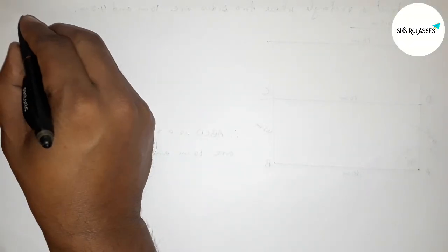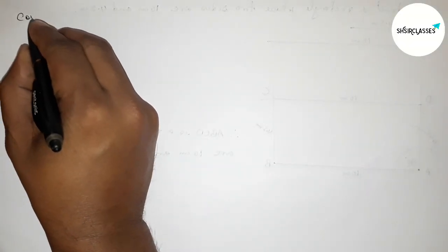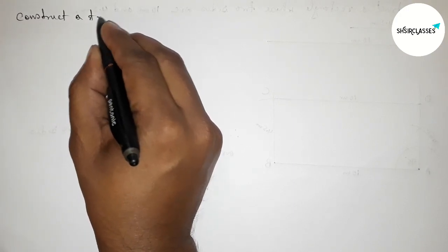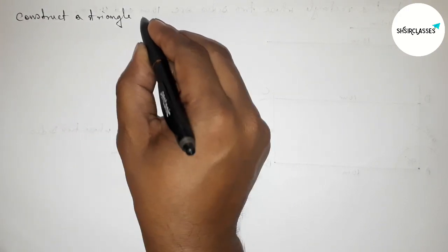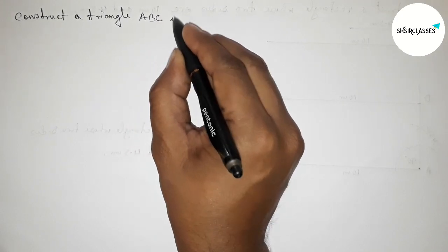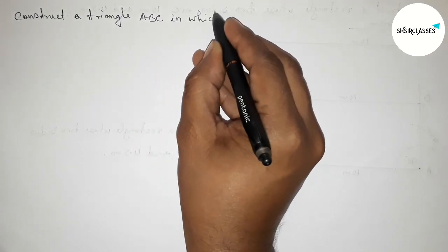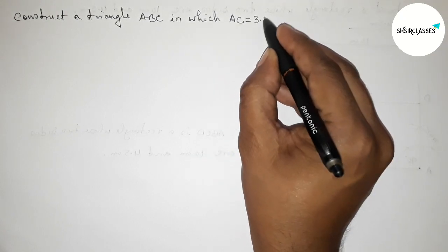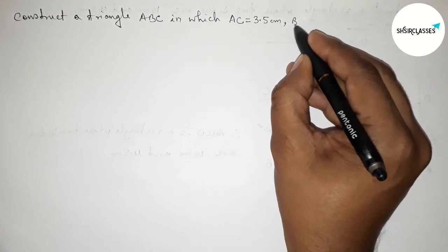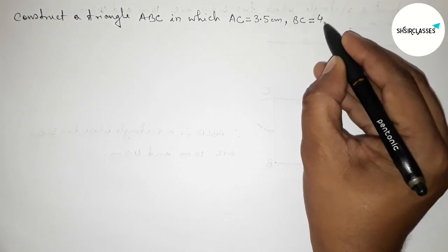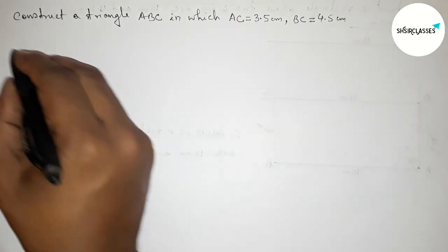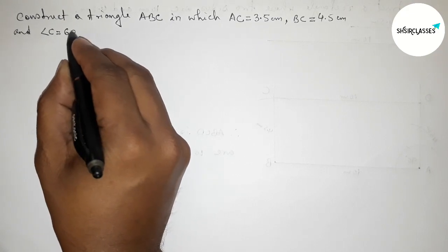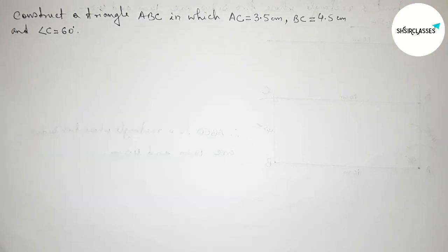Hi everyone, welcome to SI Share Classes. Today in this video we have to construct a triangle ABC in which AC equals 3.5 centimeter, BC equals 4.5 centimeter, and angle C equals 60 degrees. Please watch the video till the end. Let's start.